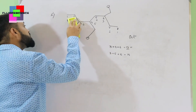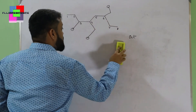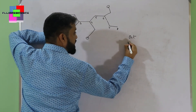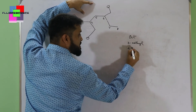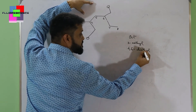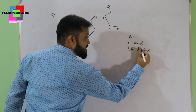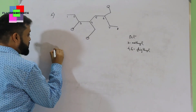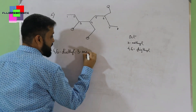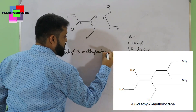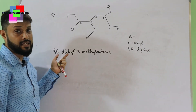So starting from the left: at position 3 we have methyl, at positions 4 and 6 we have ethyl. So we write 4,6-diethyl for the two ethyl groups. Remember: I use 'E' of ethyl for alphabetical ordering, not 'D' of di. The full compound name is 4,6-diethyl-3-methyloctane. Remember: no spaces between letters, use commas between two numbers, and hyphens between a number and a letter.